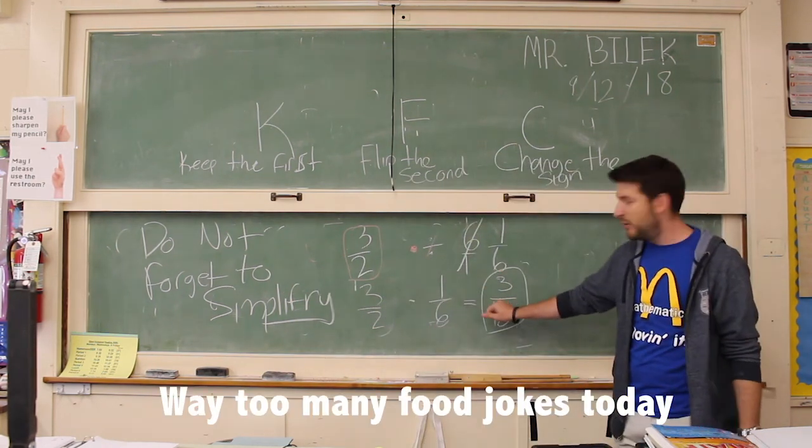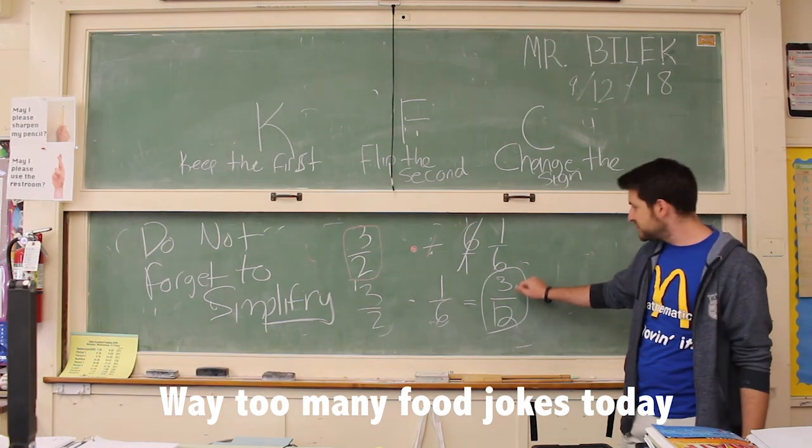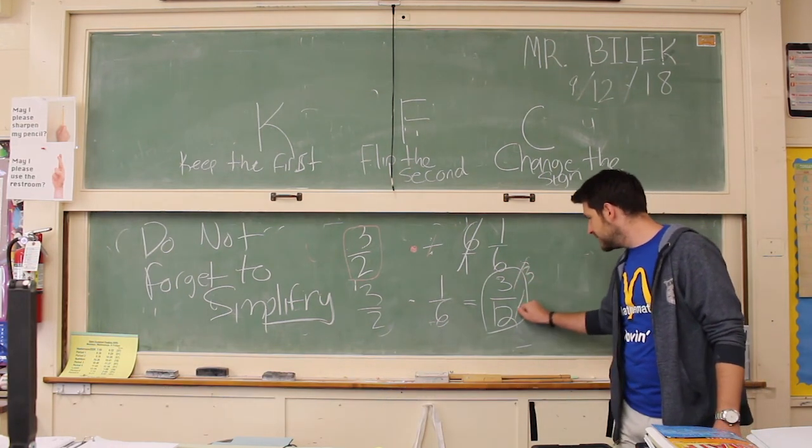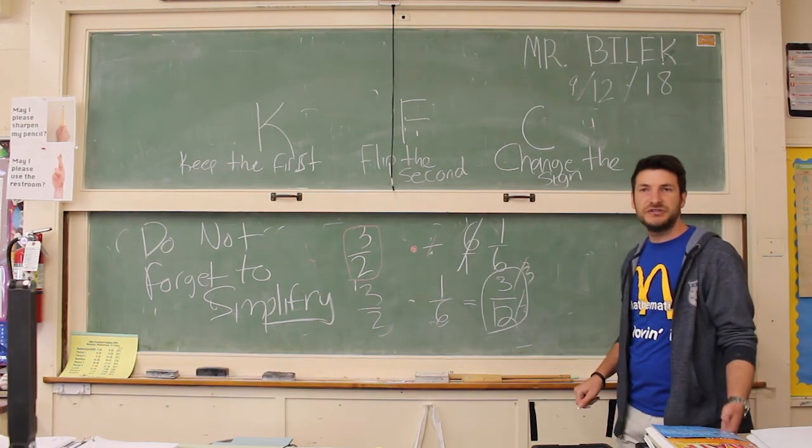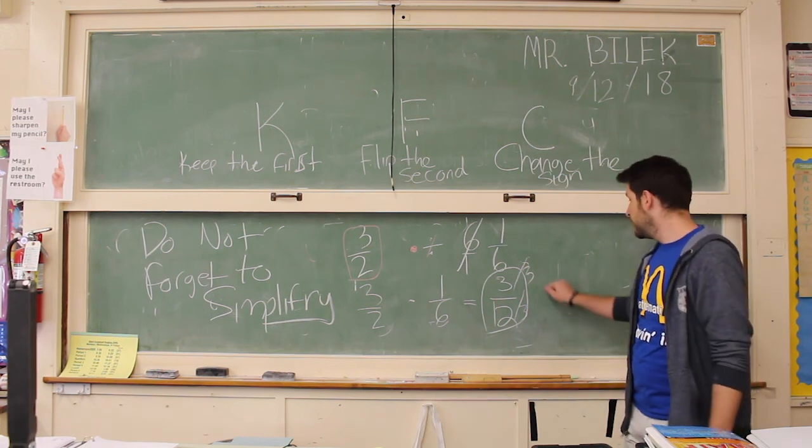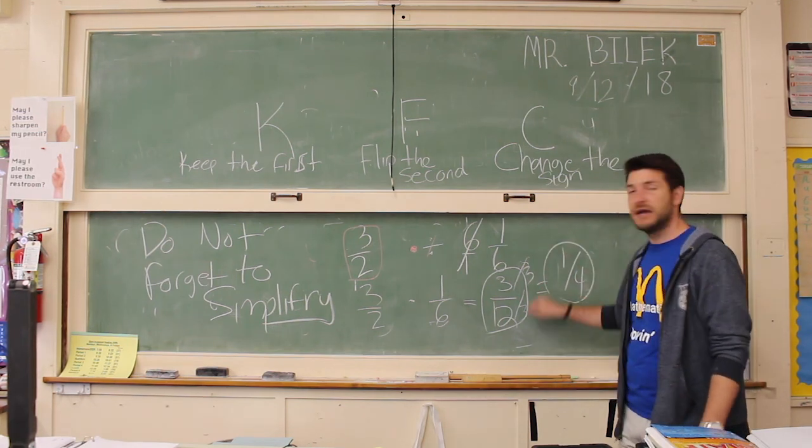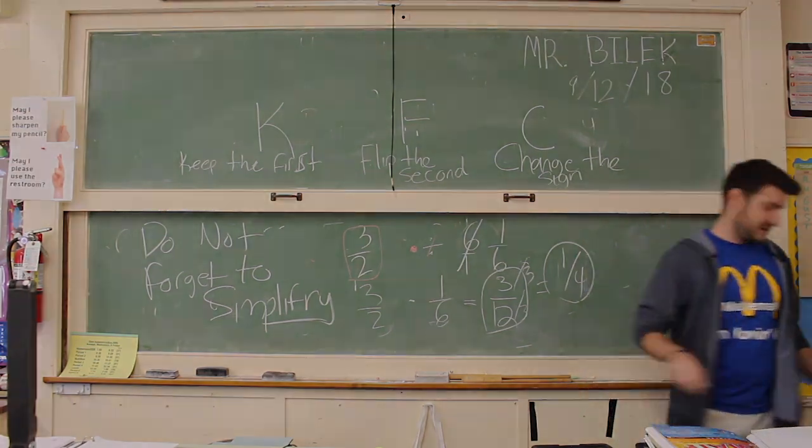So we need to simplify down three twelfths. Divide by three, divide by three. Raise your hand and tell me, what did we get? One fourth. We get one fourth, and that's our final answer. Everyone got it? Yeah. Okay, now we're done.